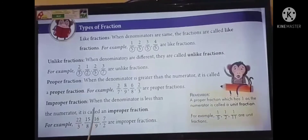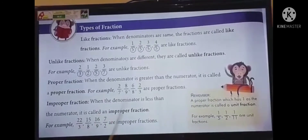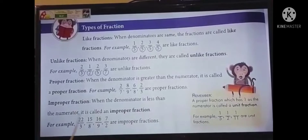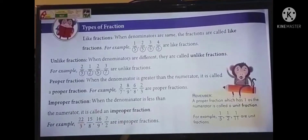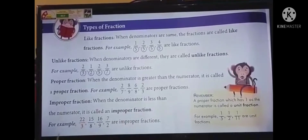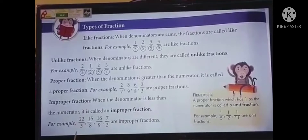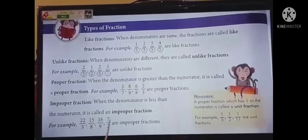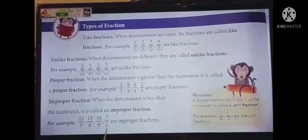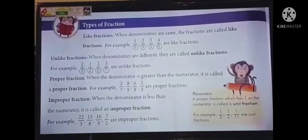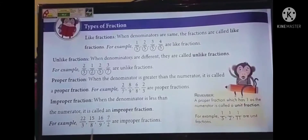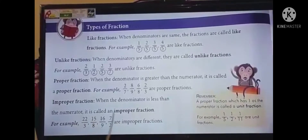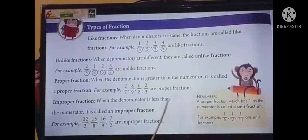Next is improper fraction. When the denominator is less than the numerator, it is called an improper fraction. For example, 22 by three, 15 by eight, 16 by nine, seven by two. In these fractions, the denominator is less than the numerator. So these fractions are called improper fractions.